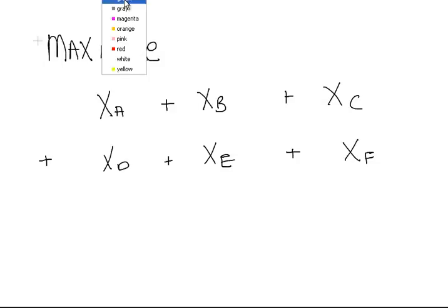First off, the variables are xa, that's either 0 or 1 depending on whether or not we are going to go ahead with project A. xb, xc, I'm going to spread this out over two lines, plus xd, plus xe, plus xf. These are going to be binary variables, either 0 or 1 depending on whether or not we go ahead with the project.